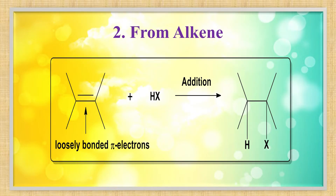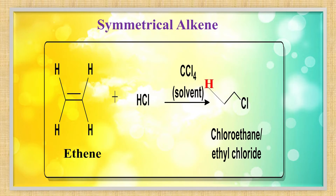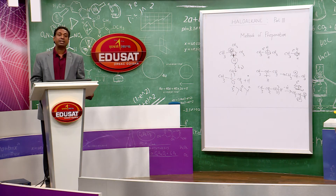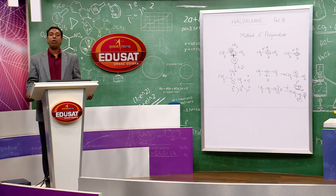The second method of preparation of haloalkane is from alkene. In alkene, there is a C=C double bond. Once you break this double bond by adding a reagent like HX (hydrogen halide), then to one carbon H attaches and to the next carbon the halogen attaches, giving alkyl halide.